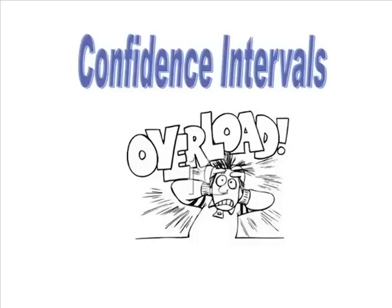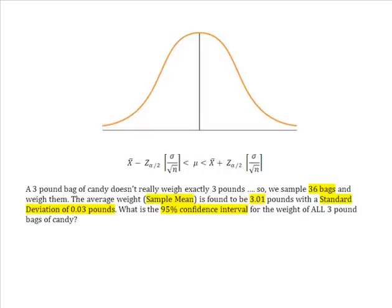Okay, here we are. We all know that a 3 pound bag of candy doesn't really weigh exactly 3 pounds. So what we do is we go in and we sample 36 bags of candy and we weigh them. The average weight of our candy, the sample mean, is found to be 3.01 pounds, and we calculate a standard deviation of 0.03 pounds. So I want to know with 95% confidence, I want to be 95% certain, of what the weight of all of my 3 pound bags of candy is.